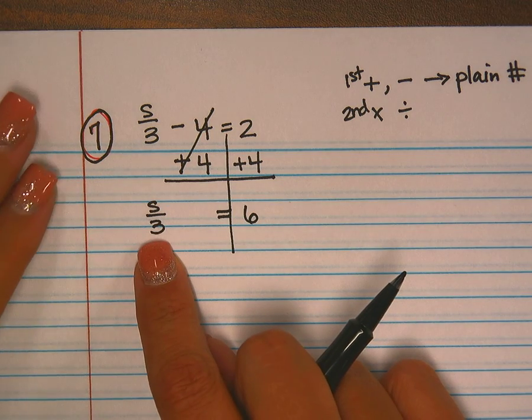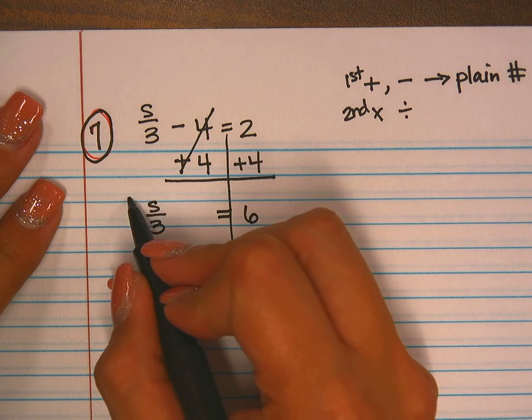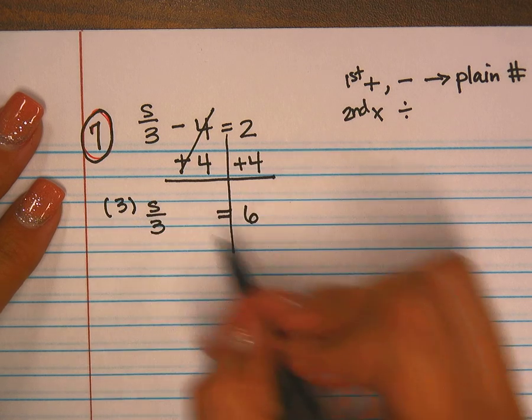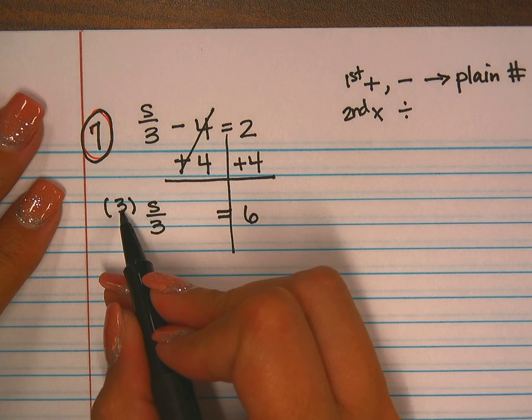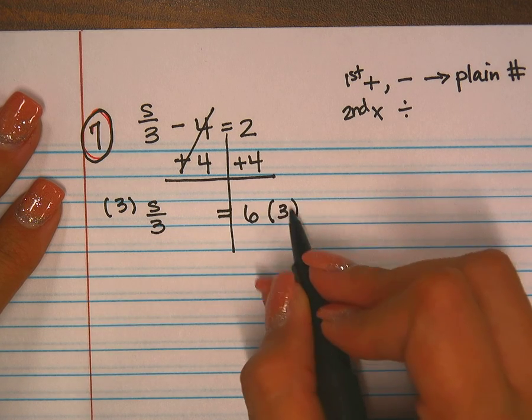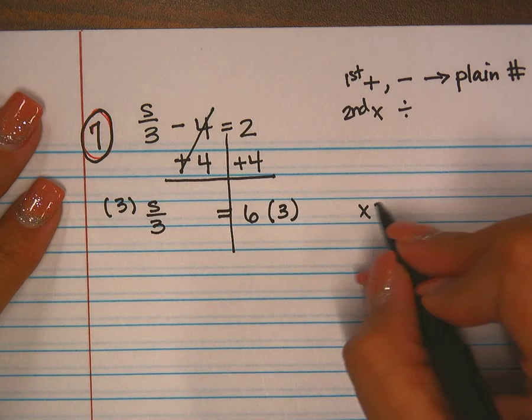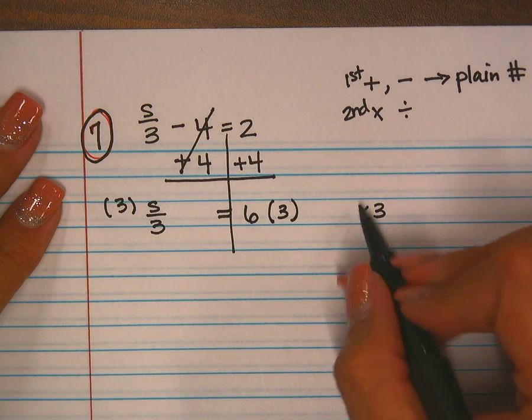Because I see division, I want to do the opposite or the inverse, and that's going to be to multiply. So instead of dividing by three, I'm multiplying by three. Notice it is up on top and over here the same thing, and I'm using parentheses to show multiplication.